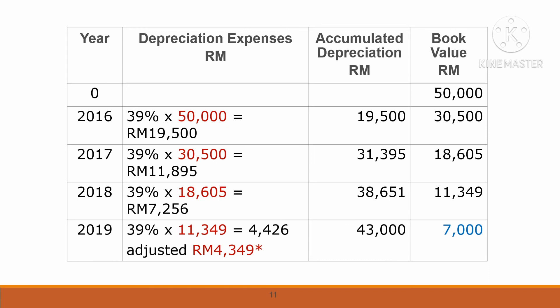For the last year 2019, the residual value is given as RM7,000. So cost RM50,000 less accumulated depreciation RM43,000 gives the residual value RM7,000. The calculated depreciation is RM4,426, but we must adjust it to RM4,349. This is because to reach total accumulated depreciation of RM43,000, we calculate RM43,000 less RM38,651, and adjust the 2019 depreciation accordingly to RM4,349.